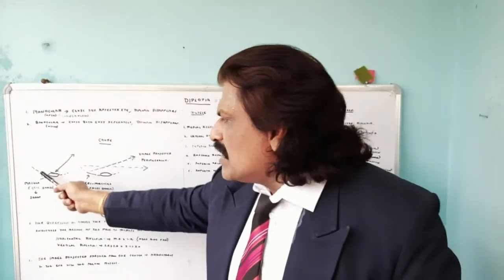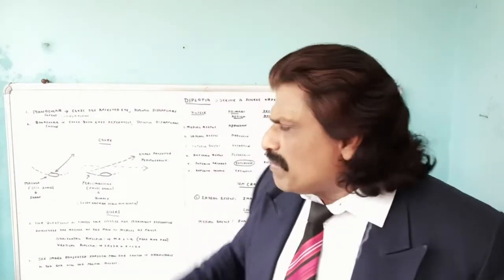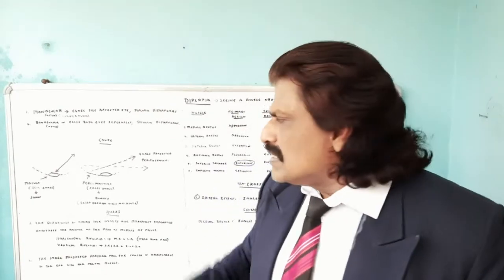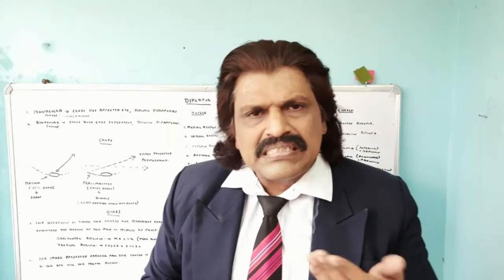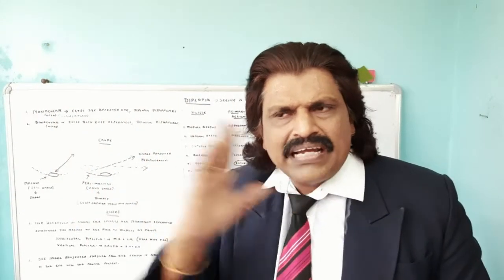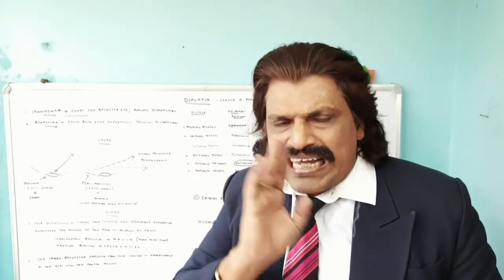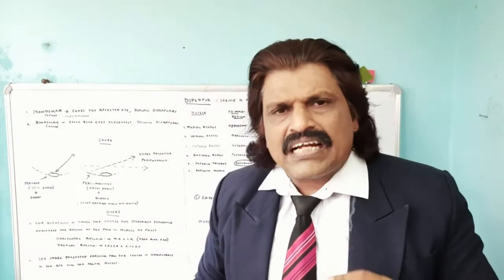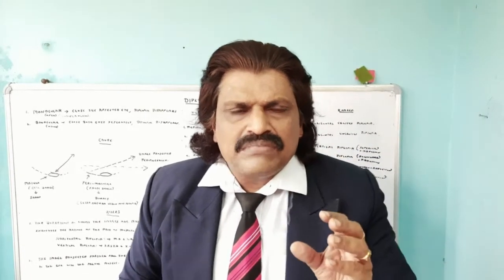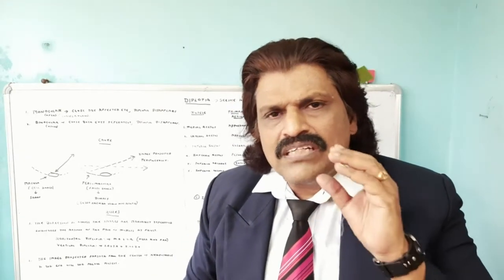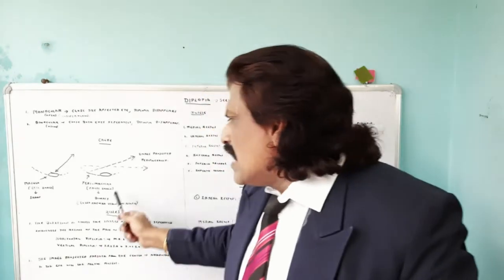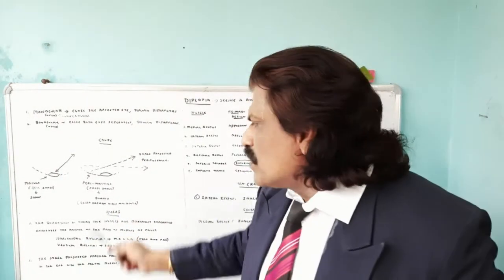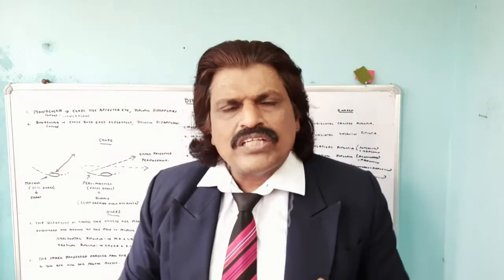If the image is seen with the normal eye, it falls on the macula — this is called the real image and it appears sharp. Simultaneously, if there is a cranial nerve palsy, for example sixth nerve palsy causing lateral rectus palsy, the eye cannot move laterally and the image falls nasally on the nasal retina. When the image falls on the perimacular area, it appears blurred because it is not falling on the macula. This blurred image we call the false image.